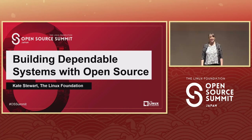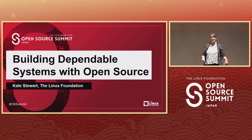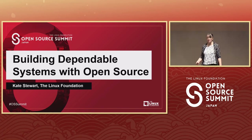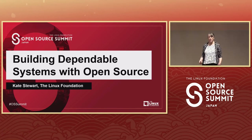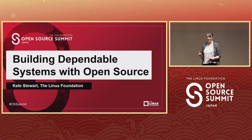My name is Kate Stewart, and I have been focusing for the last couple of years here at the Linux Foundation on what we need to do to help embedded open source systems become dependable. In system engineering terms, dependability is a measure of a system's availability, reliability, maintainability, safety, and security.